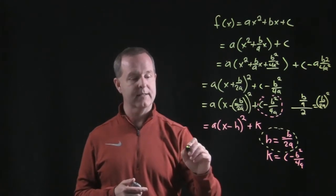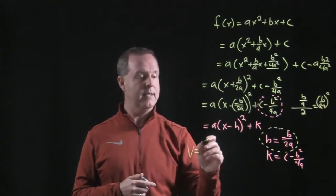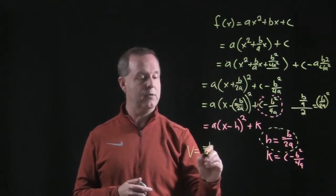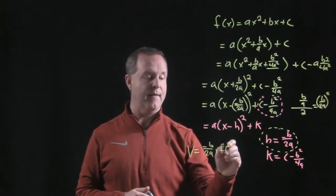So the vertex of a graph that's in the traditional form is my h, which is minus b over 2a, and its y value is the function evaluated at that point.